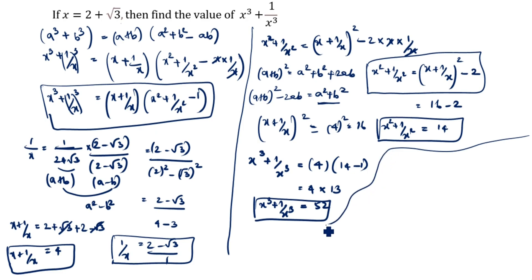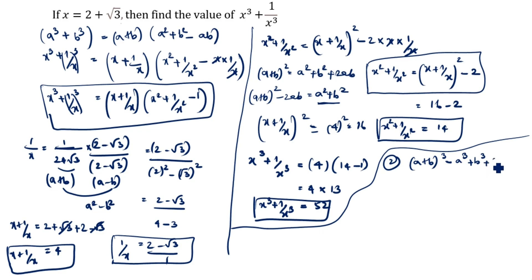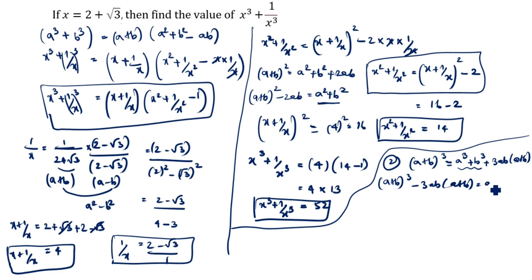This is the first method. Now we will see the second method. What is the formula of a plus b whole cube? a plus b whole cube equals a cube plus b cube plus 3ab times a plus b. Rearranging, a cube plus b cube equals a plus b whole cube minus 3ab times a plus b. We can see the x cube plus 1 by x cube format.